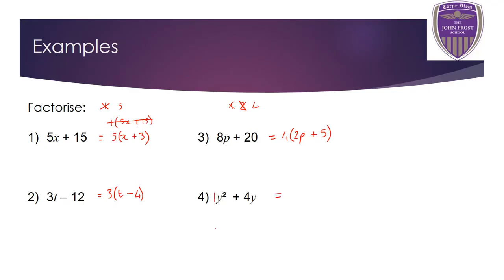The final example: there's no number written in front of y squared — we wouldn't write 1y squared. The highest common factor of 1 and 4 is 1, and we never put 1 outside the bracket. However, I can see there is a letter y in both terms. Y squared means y times y, and 4y means 4 times y, so I take y out as the common factor. Then: y times y gives y squared, and y times 4 gives 4y. So y² + 4y factorizes to y(y + 4).